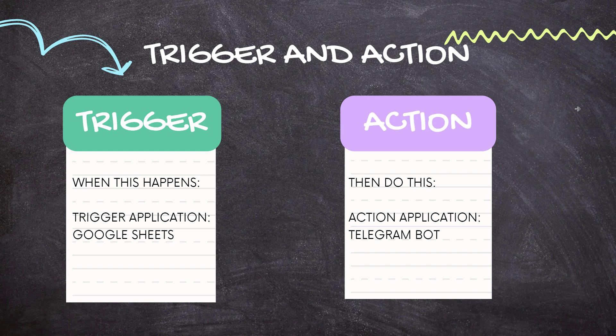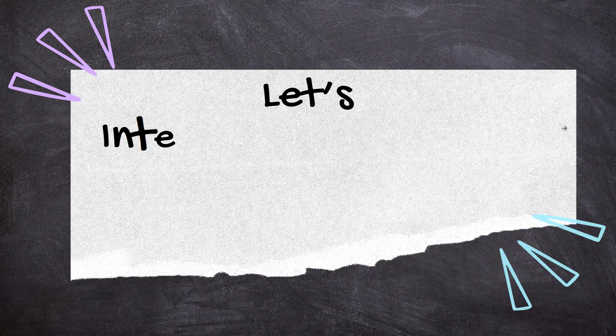Our overall objective is that whenever in a Google Sheet I add the post content and the post title in a new row, that should be sent automatically as a message in my Telegram group.